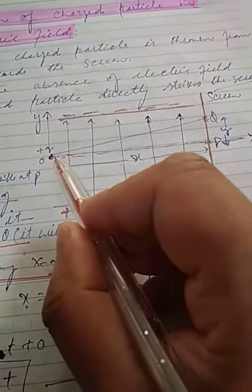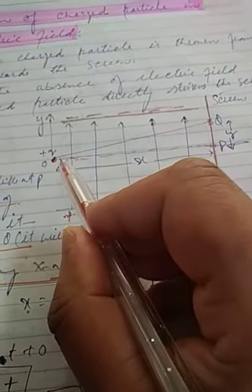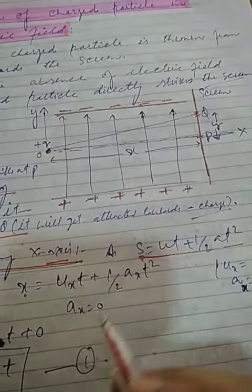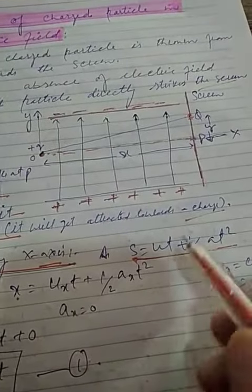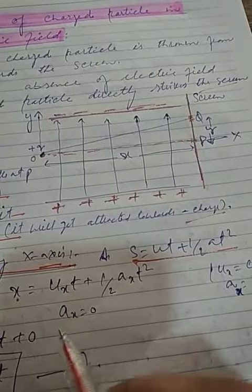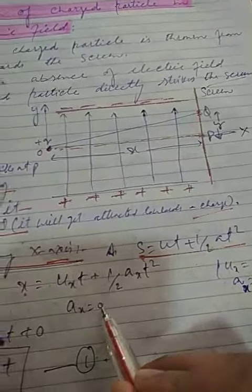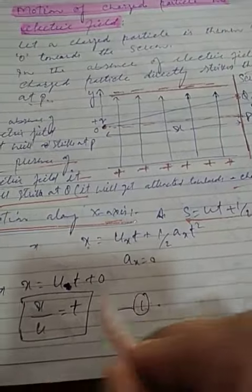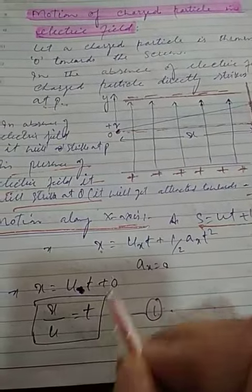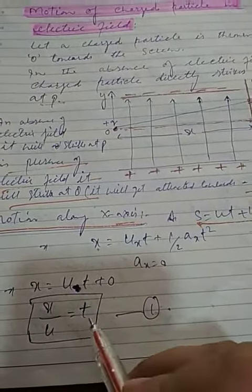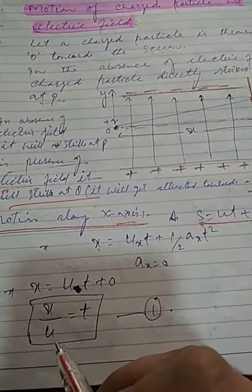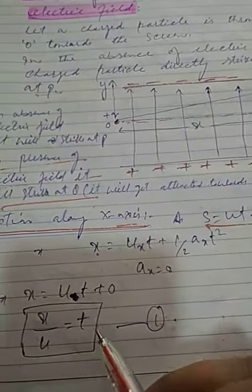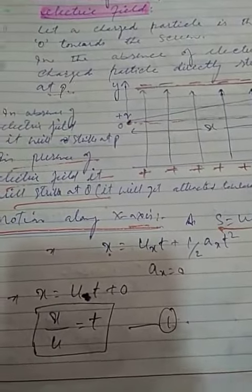Since we give the charged particle a constant velocity along the x-axis, the acceleration aₓ is equal to zero. Therefore x = uₓt + 0, which means t = x / uₓ. This is the expression for the time period.